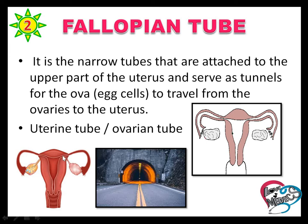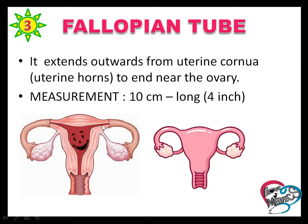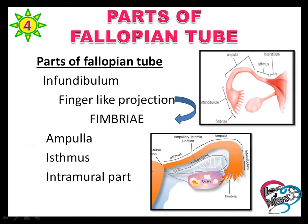The fallopian tube is also called the uterine tube and ovarian tube. It extends from the uterine cornua to near the ovary, and the measurement is 10 cm in length, which is 4 inches. Parts of the fallopian tube are the infundibulum — which has finger-like projections called fimbriae — ampulla, isthmus, and intramural part.